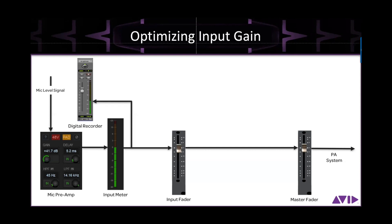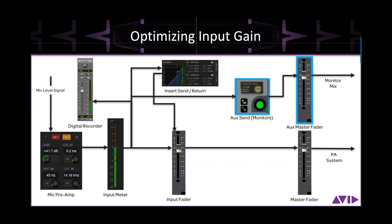If we're mixing front of house and monitors from the same console, that preamp level affects our insert return possibility and our aux sends to our monitors. If we have to turn down that input gain 20 dB to get the level right in the house, we've now penalized all these other areas by that amount of gain.